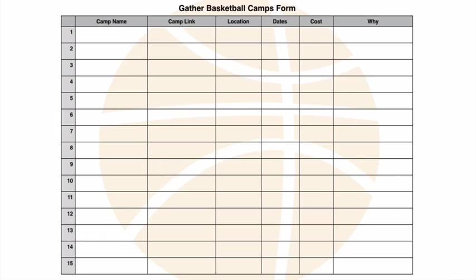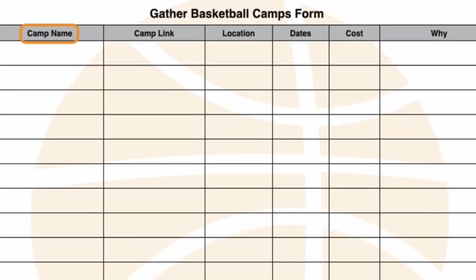Here it is — the Gather Camps basketball form. Real simple. You'll see the 15 different sections to list the camp. On the left we have the camp name, the camp link, the location, the dates. If you find a camp you might want to go to twice, go ahead and list it twice so you can list two different dates — maybe you're thinking about a father-son camp or an advanced camp for the same organization. It's also got the cost, which will help you budget when you start to get organized, and the 'why' — why do you want to go to this camp? What makes it different, unique? It's good to make a detailed explanation for this so that when it comes down to really picking and choosing, you can spark your memory to remember why you wrote this camp down and why you thought it would be a good choice for your kid.